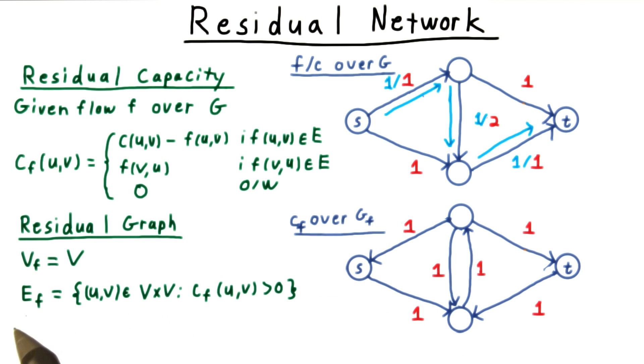In the residual graph, the edges are those uv pairs for which the capacity is positive. Keeping the network sparse helps in the analysis.